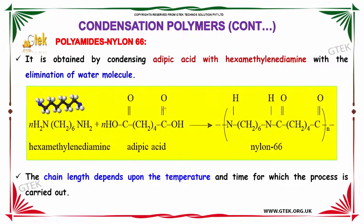Nylon 66 is an important form of polyamide. It is obtained by condensing adipic acid with hexamethylenediamine with the elimination of a water molecule. N moles of hexamethylenediamine reacts with N moles of adipic acid. The hydrogen reacts with the oxygen present and forms OH groups, and finally we obtain N moles of Nylon 66.